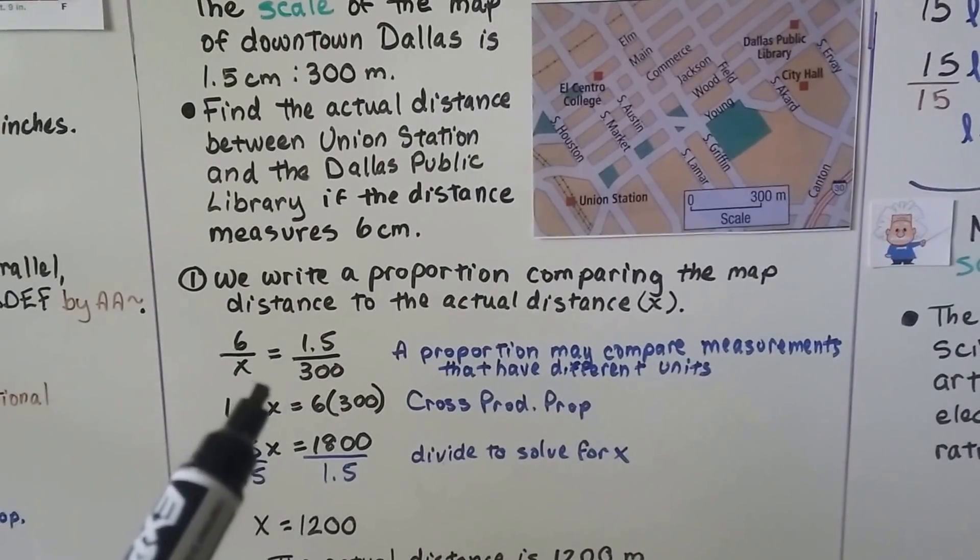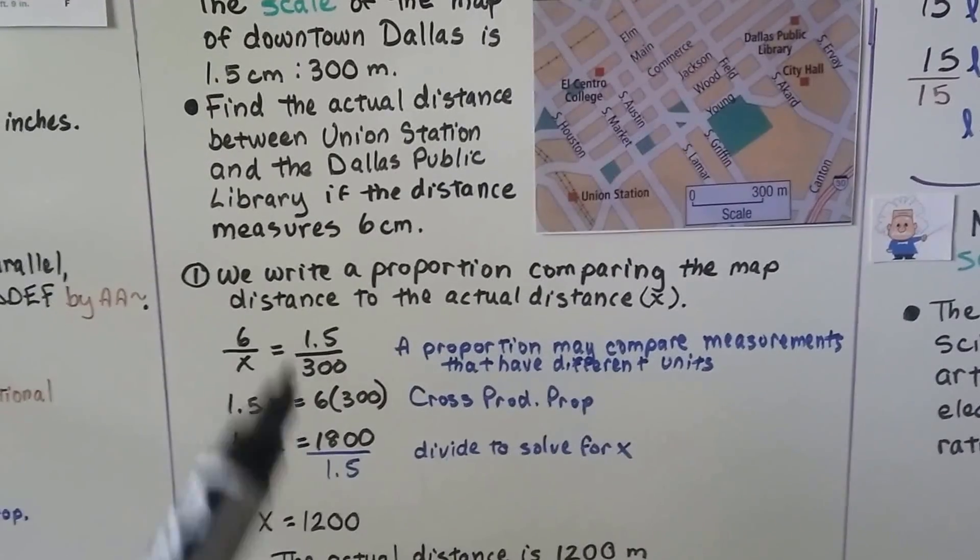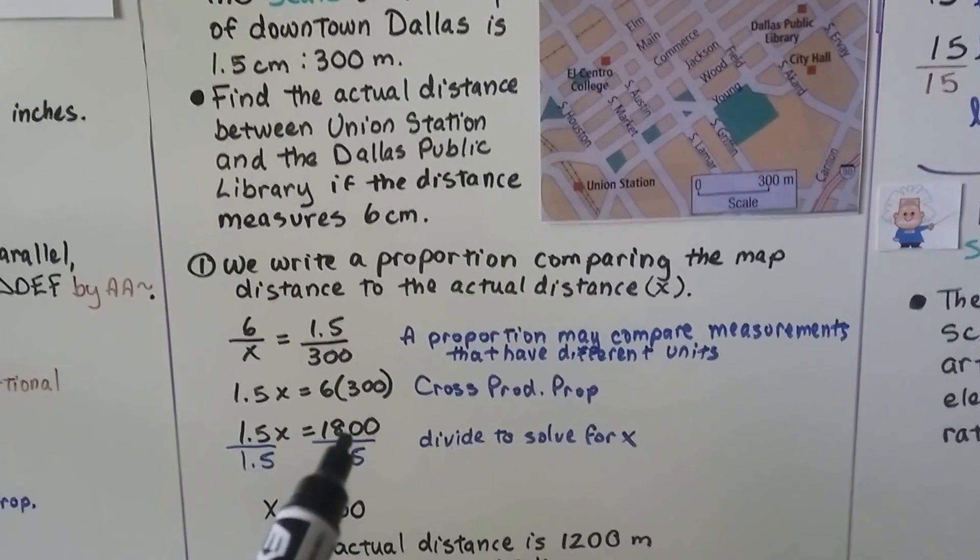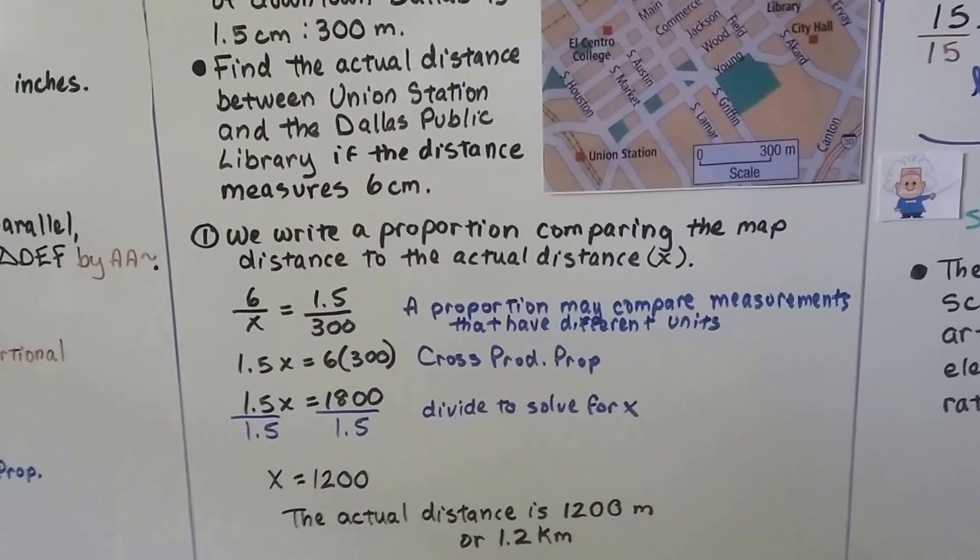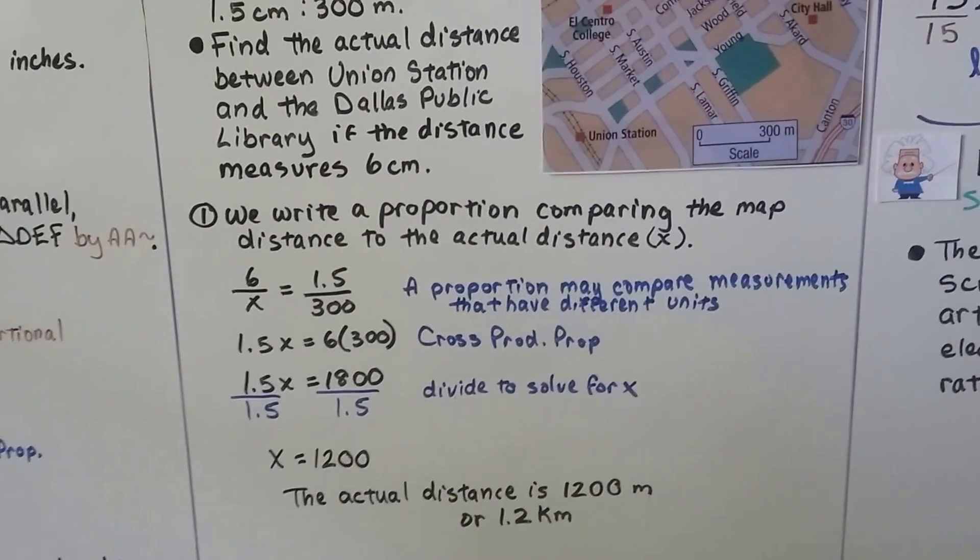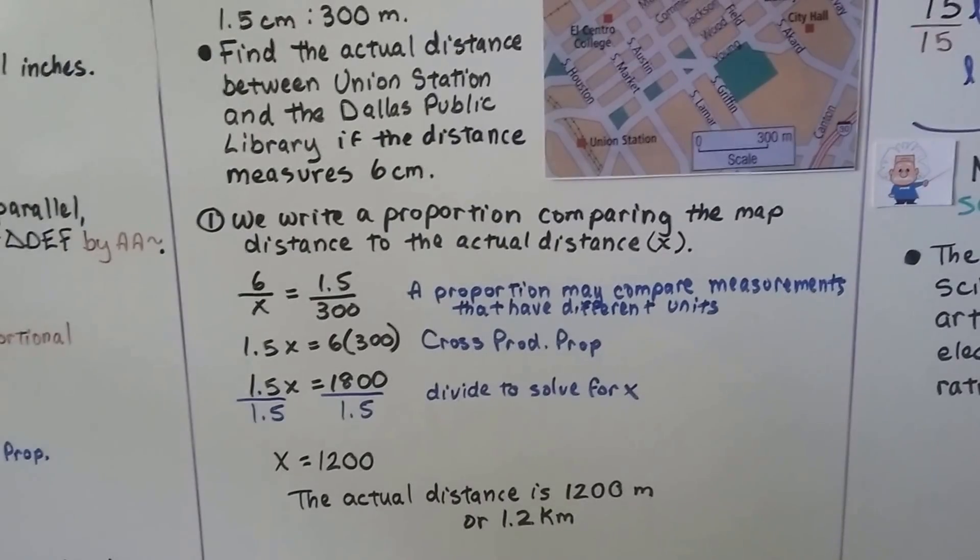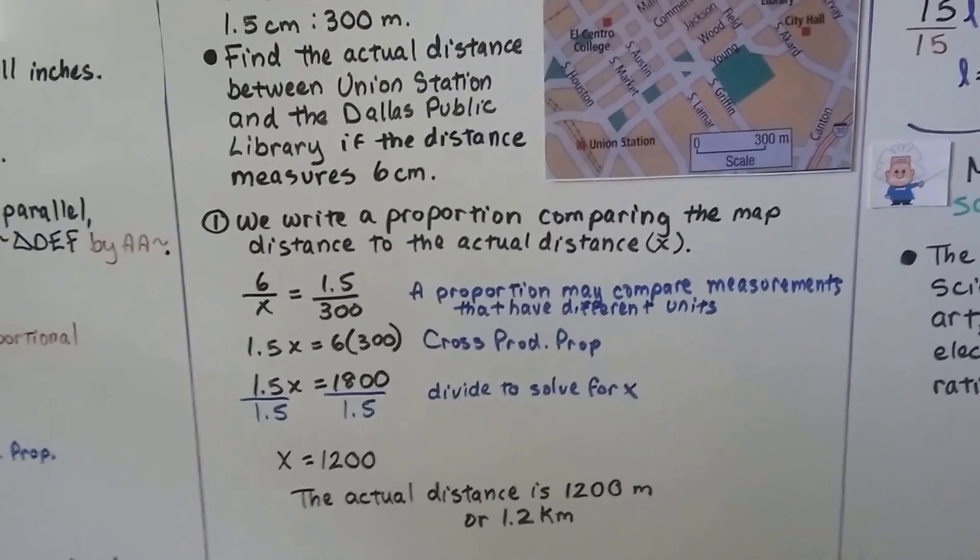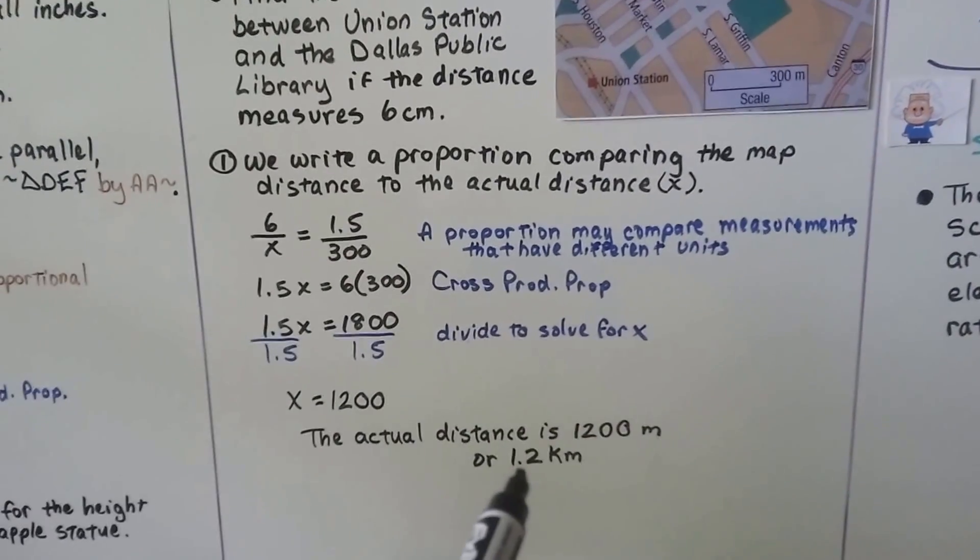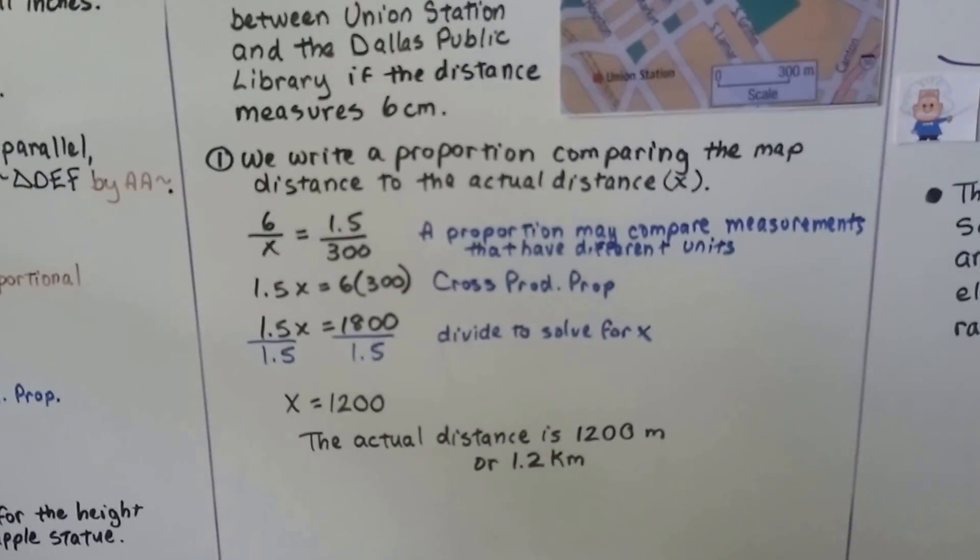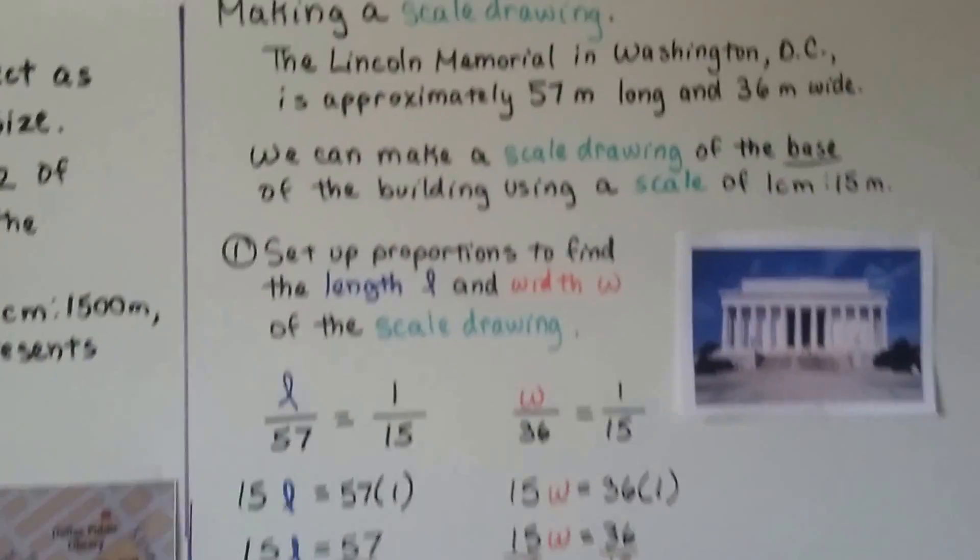We have cross products so we can do 1.5X is equal to 6 times 300. 6 times 300 is 1,800. We divide both sides by the 1.5 coefficient and we get that X is equal to 1,200. So the actual distance between Union Station and the Dallas Public Library is 1,200 meters. We can also say that's 1.2 kilometers.